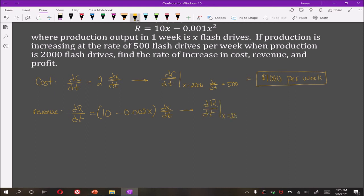So dR/dt when x is 2000 and dx/dt is 500, if we plug those values in we are going to get $3,000 per week. So revenue is increasing at a rate of $3,000 per week.